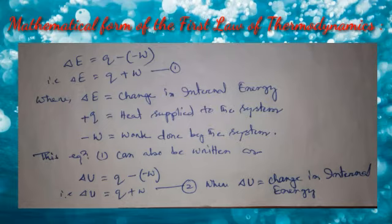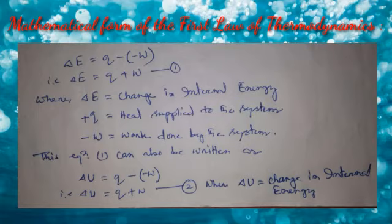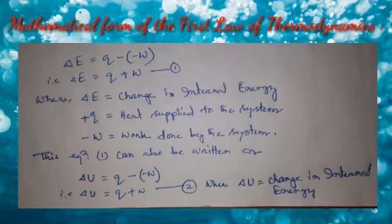In equation 1, ΔE represents the change in internal energy. Q here means plus Q — the sign of Q is positive. Plus Q represents heat supplied to the system. If the sign of Q is negative, that means minus Q, which means heat released by the system.